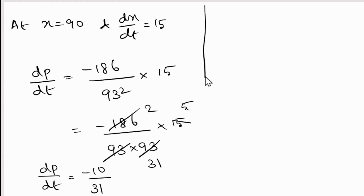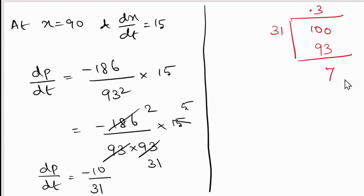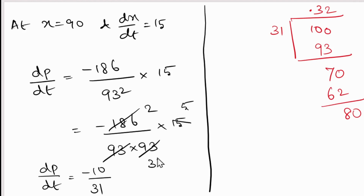Converting to decimal: dividing 10 by 31. Since 31 × 3 = 93, we get approximately 0.32. So dp/dt ≈ -0.32.